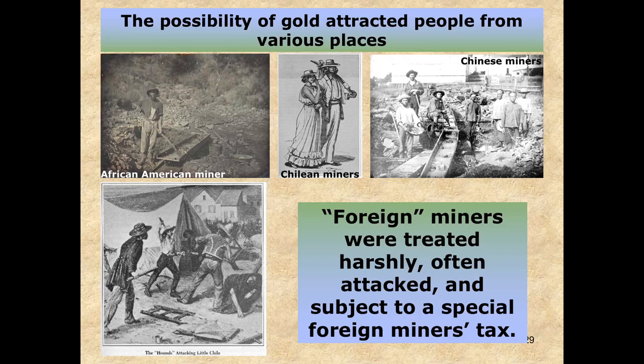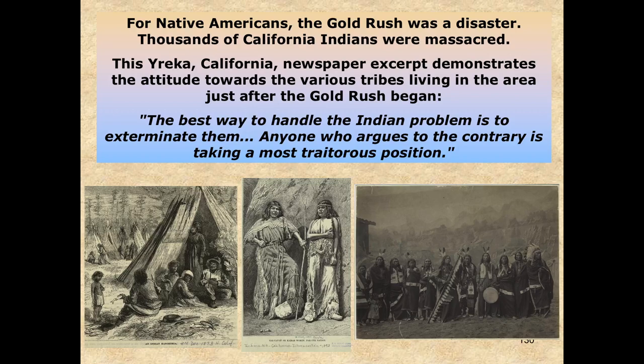Just like out East with the Know Nothing Party and how they hated on the Irish and German immigrants, here out West they're hating on the Chinese. They're going to be subject to scrutiny and discrimination — having them pay a special foreigner's miner tax, plus threats of violence and harassment by nativists. For Native Americans, though, the Gold Rush is kind of disastrous because it gets people encroaching on their land. Now that people know that gold is out in California, they're also suspecting that silver and other precious metals are going to be throughout the West.